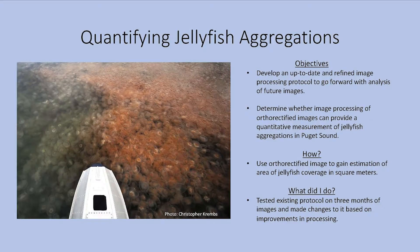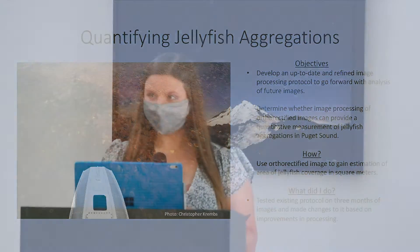My project was quantifying jellyfish aggregations. I had two objectives: the first was to develop an up-to-date and refined image processing protocol to go forward with analysis of future images, and I also wanted to determine whether image processing of orthorectified images can provide a quantitative measurement for these jellyfish aggregations. I used orthorectified images to gain an estimation of jellyfish area and coverage in square meters. An orthorectified image is basically taking an image taken at an angle — in this case aerial photographs — and making it so you're looking at it straight on with no angle.